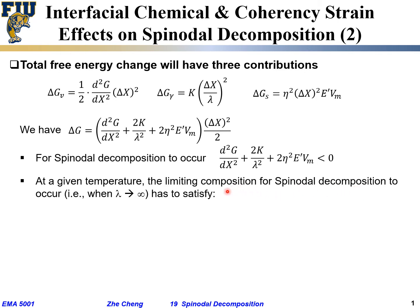When we consider both geometric and chemical mismatch, the boundary for spinodal decomposition shifts. When lambda goes to infinity, the middle chemical term can be neglected. Then the condition requires the second derivative of Gibbs free energy plus the geometric term to still be smaller than zero—meaning the second derivative must be more negative than negative 2 eta squared times the reduced modulus times molar volume.